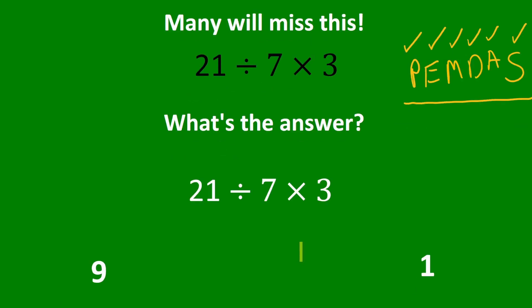So multiplication and division actually have equal precedents. That means you just do them left to right in order. So is the answer here 9 or 1?